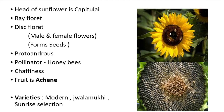The disc floret, which is in the middle portion, consists of male and female flowers which form seeds. Protandry is seen in sunflower, where the male flower matures first, and the time difference between male and female flower maturity is nearly 18 to 24 hours. The chief pollinator of sunflower is honey bees.